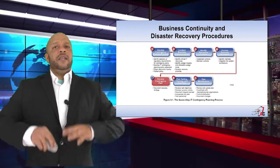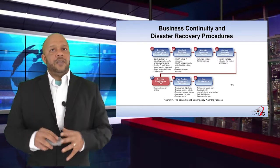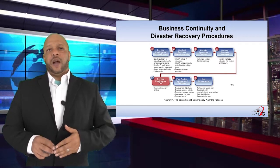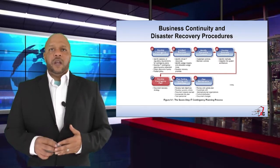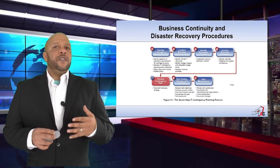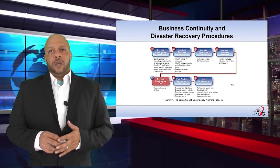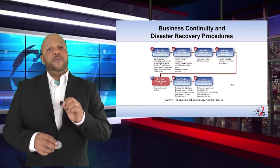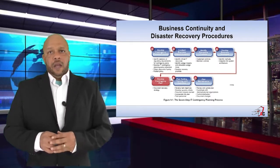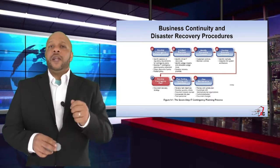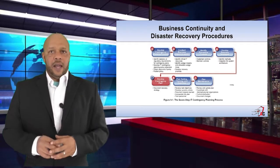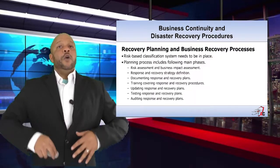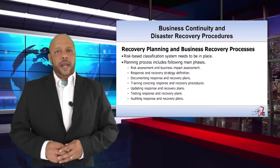The seven-step IT contingency planning process begins with Step 1: develop contingency planning processes. Step 2: conduct business impact analysis. Step 3: identify preventative controls. Step 4: develop recovery strategies. Step 5: develop contingency planning. Step 6: plan, test, train, and exercise. Step 7: plan maintenance. Risk-based classification systems need to be in place.